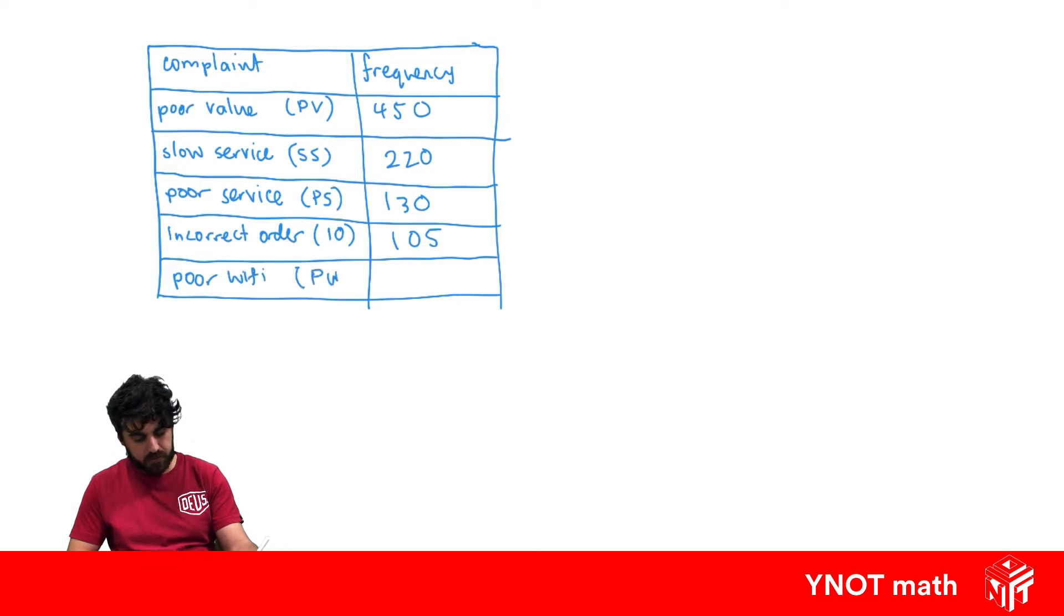Say PW, and we had 95 here, and this totaled to a thousand complaints. Now what we want to do is construct a Pareto chart for this data and then maybe recommend what the fast food chain can do to improve their performance.